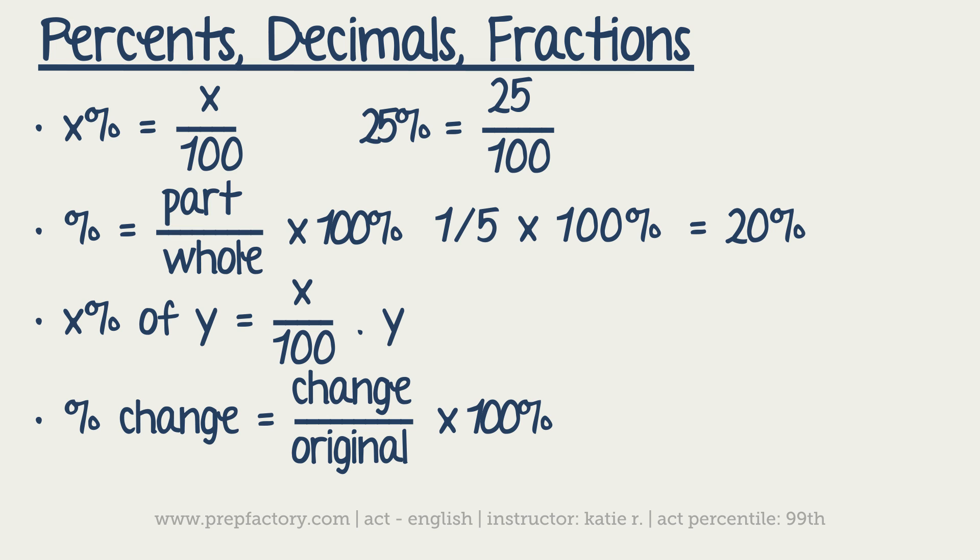So for instance, if I said, what is 10% of 80? I could set it up the same way, 10 over 100 times 80 to get 8. It's also the same as saying like 0.1 times 80, that'll also give you 8 as well.